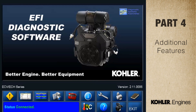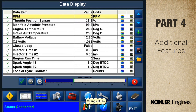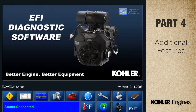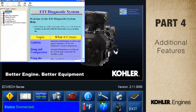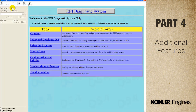This is the units selection button. Use it to select your units of measure for engine temperature and pressure. This is the system help button. It contains the most complete and updated information on the EFI diagnostic software. You can search by topic or use the search bar. System help is automatically updated whenever there are software updates.